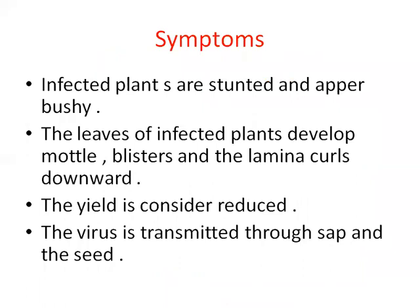Regarding the particular symptoms of this disease, infected plants are stunted and obvious at the top of the bush. The leaves of infected plants show blisters and the lamina curls downwards. This downward curling of the lamina is one of the important identifying characteristics.